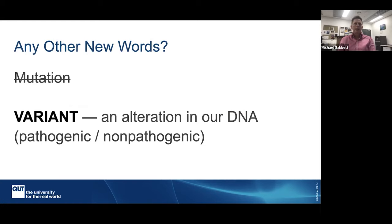The word mutation is out — we now talk about variants, because the word mutation means different things to different people. Variant is the preferred terminology. We then talk about whether that variant is pathogenic, meaning causing disease, or not pathogenic — a normal polymorphism. Having said that, I often still use the word mutation when talking about cancer. When we're talking about mutations in cancer genomics, most people do actually speak the same language. So having defined the word variant, you will still hear me use the word mutation in this presentation.